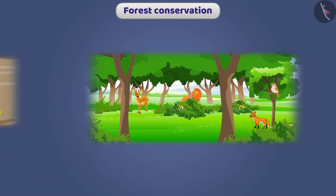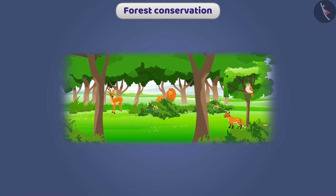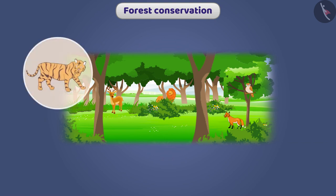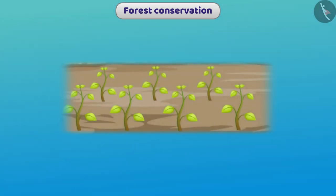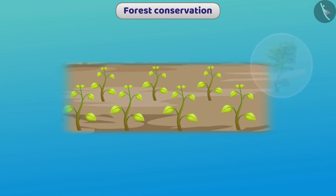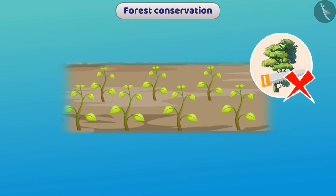But the biodiversity was destroyed on a large scale, and various species became extinct or are on the verge of extinction. We should fulfill industrial needs by planting trees on barren lands and not by cutting forests.